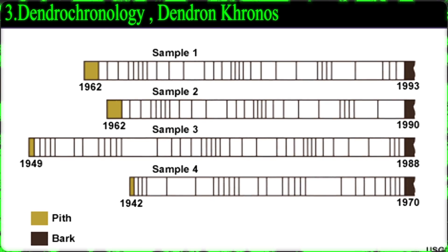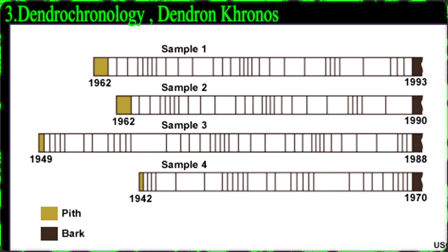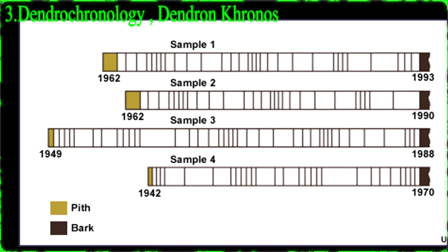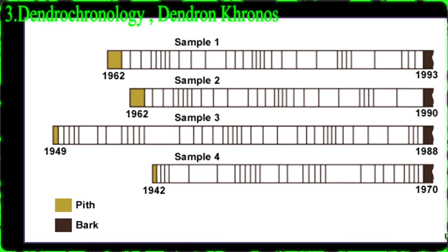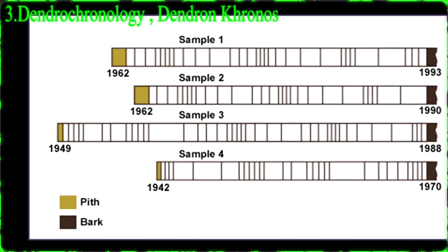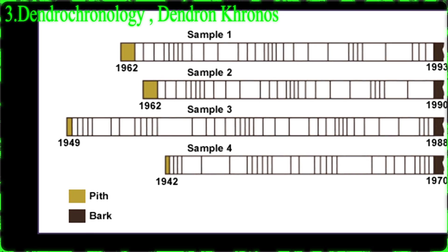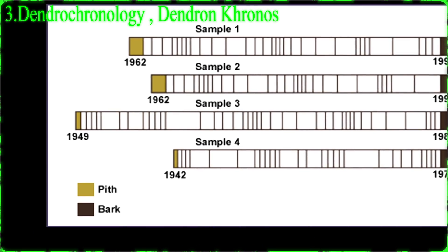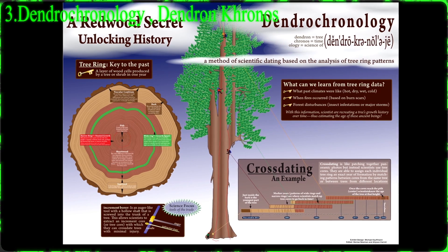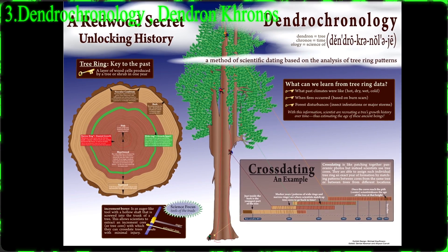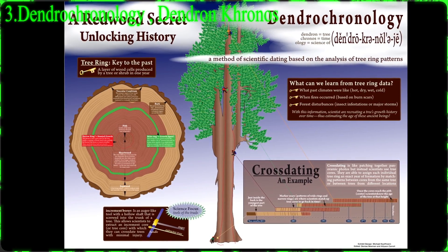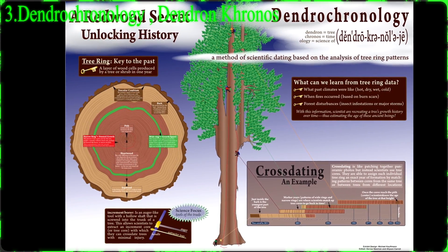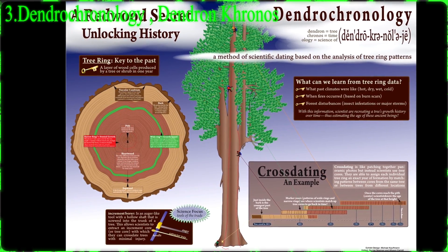Number 3: Dendrochronology. Dendrochronos, meaning tree limb time. Most everyone has heard of this method, but likely not by its scientific name. Tree ring dating, as it's normally referred to, is an extremely underrated method of determining the age of wood.